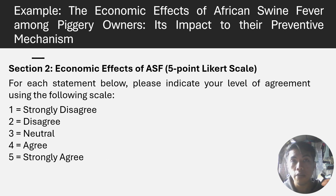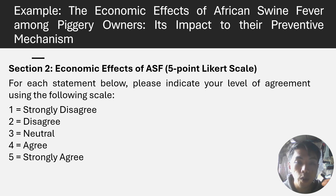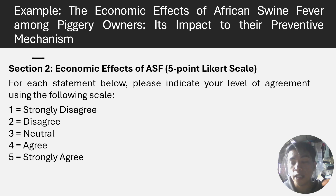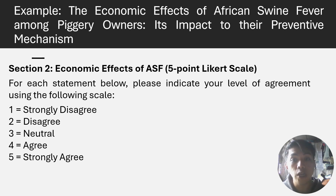In Section 2, we begin with the Likert scale — though the checklist in Section 1 is optional. Here we answer one of the variables, which is the independent variable: the economic effects. We will give survey questionnaires to identify what economic effects ASF caused to the piggery owners. Respondents will rate themselves according to their level of agreement: 1 - Strongly Disagree, 2 - Disagree, 3 - Neutral, 4 - Agree, 5 - Strongly Agree.